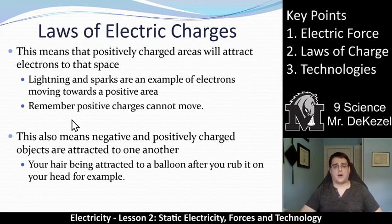Negative and positively charged objects are attracted to one another — not just protons and electrons, but positively and negatively charged objects in general. Your hair being attracted to a balloon after you rub it on your head is a great example. Your hair and the balloon are different charges — one is positive and one is negative, so they're attracted together. The hair is very light, so that's why it lifts up.